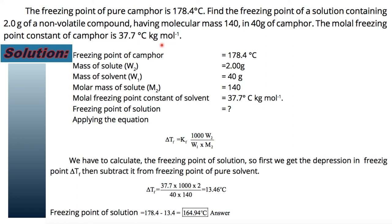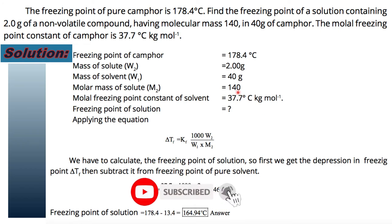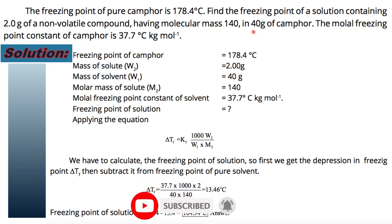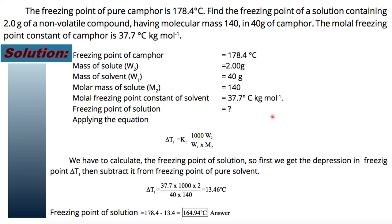The cryoscopic constant for camphor is 37.7°C·kg/mol. Note that the freezing point of camphor is 178.4°C, which is quite high compared to water at 0°C. The mass of solute added is 2 grams, the mass of solvent (camphor) is 40 grams, the molar mass of solute M2 is 140 g/mol, and Kf is 37.7°C·kg/mol.